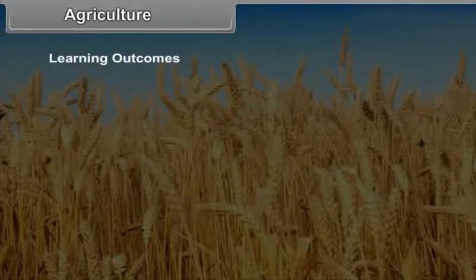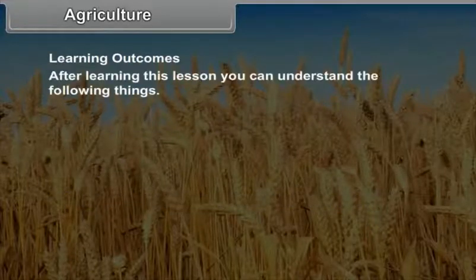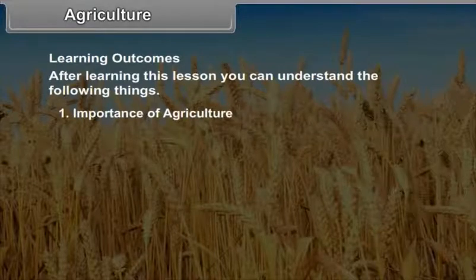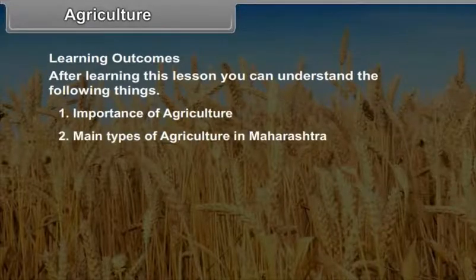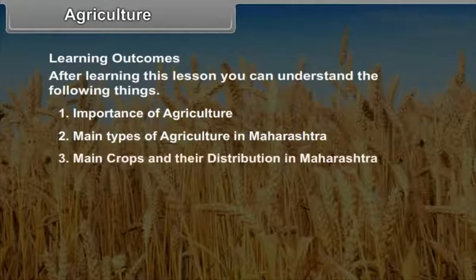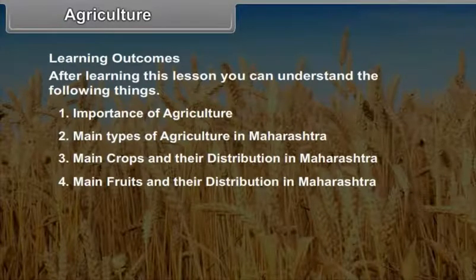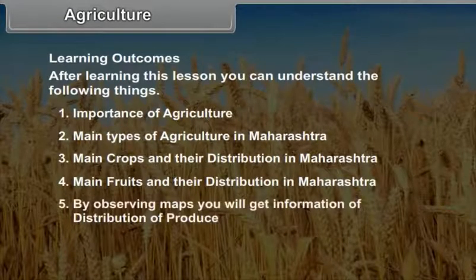Learning Outcomes: After learning this lesson, you can understand the following — the importance of agriculture, the main types of agriculture in Maharashtra, main crops and their distribution in Maharashtra, main fruits and their distribution, and by observing maps, you will get information on the distribution of produce.